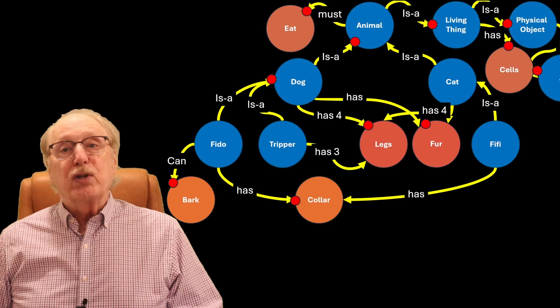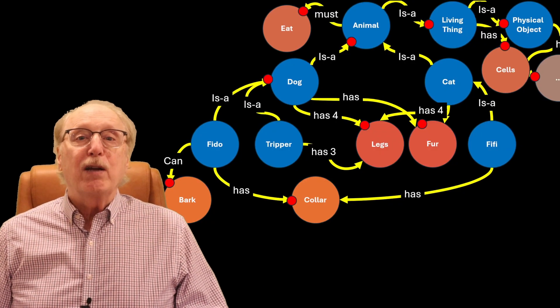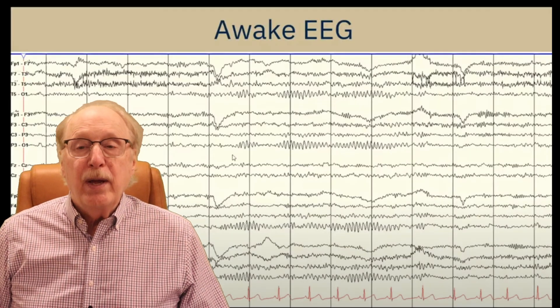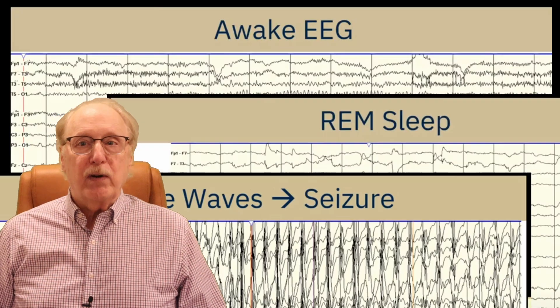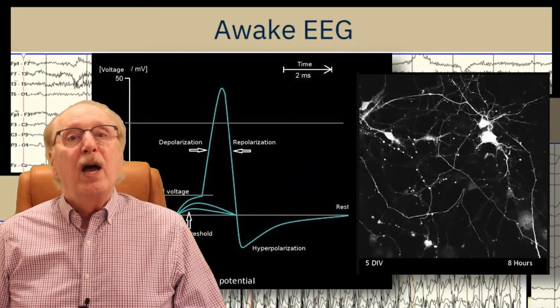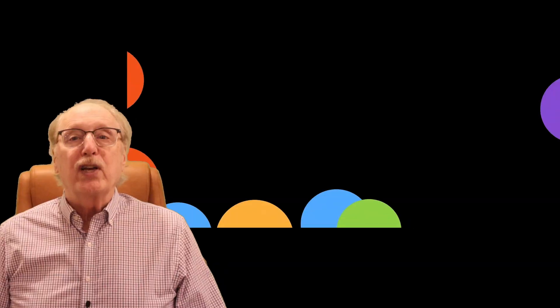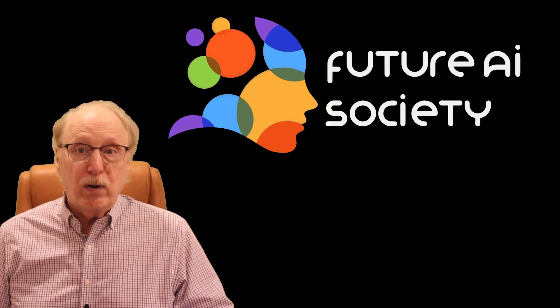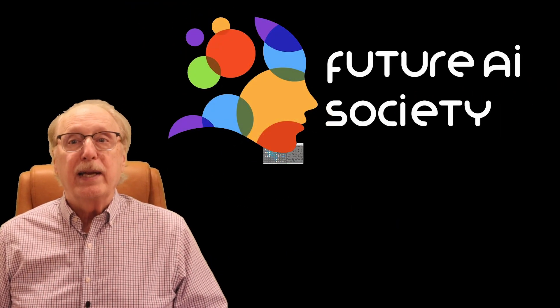I'm Charles Simon, long-time AI researcher, software developer, and manager. Beyond AI I've developed software for neurological test instruments and neural simulators. I created the Future AI Society to explore how neuroscience can inform smarter, more human-like AI.